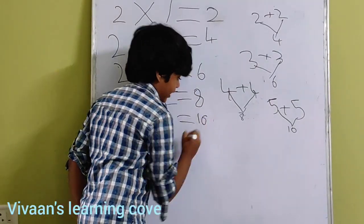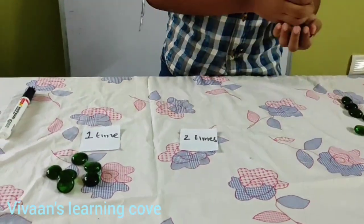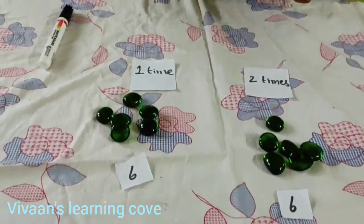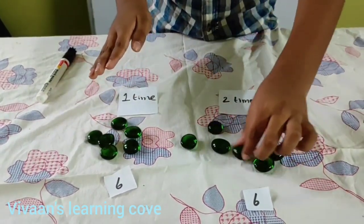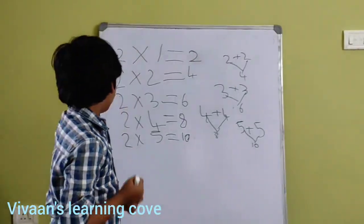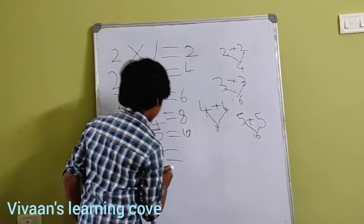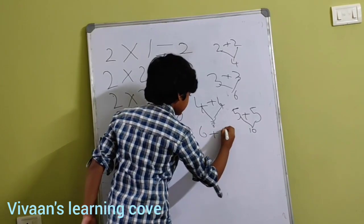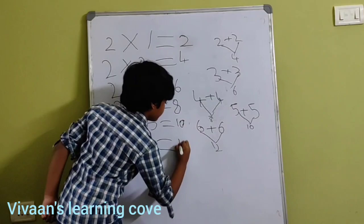Now I am going to take 6 pebbles 1 time and 6 pebbles 2 times. I represent these cards under 1 time and 2 times. Let us count: 6 here, 6 here — so 7, 8, 9, 10, 11, 12. There are 12 pebbles. These cards mean 2 times 6. We write it in multiplication as: 2 times 6 equal to 12. We write it as 6 plus 6 equal to 12.